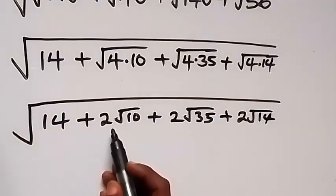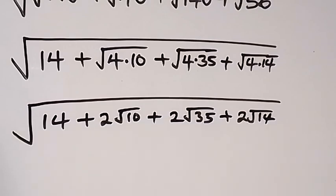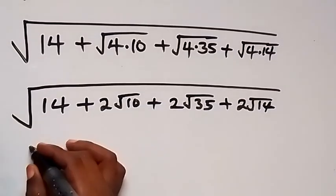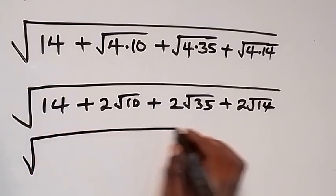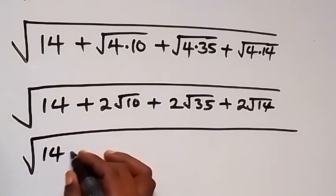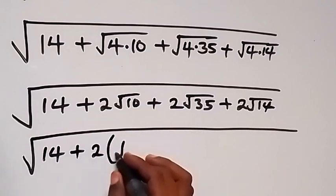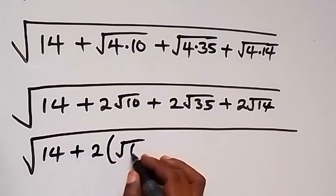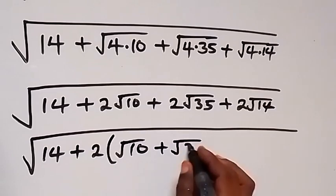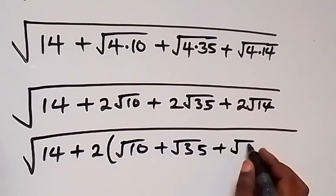In the next step we can also bring this 2 outside, because we have 2, 2, 2 — we can factor it. And then this will become root 14, then plus 2 outside, now we have root 10 plus root 35 plus root 14.